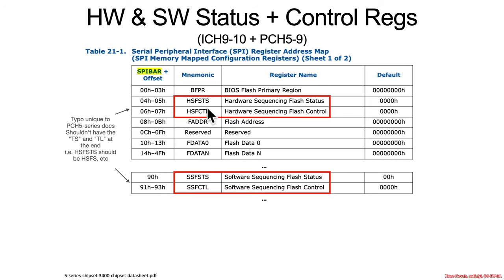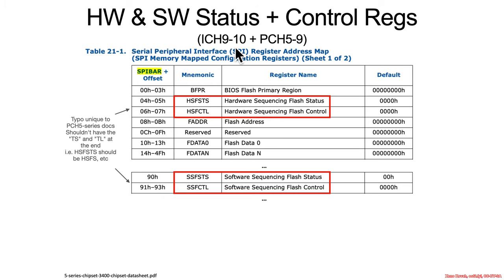At this point, there is probably a typo in that HSFSTS and HSFCTL — more often than not in the data sheets, it's just referred to as HSFS, etc. So later on, I'll probably refer to things as HSFS dot something, just so as not to confuse you. That was for ICH 9 and 10, PCH 5 through 9.